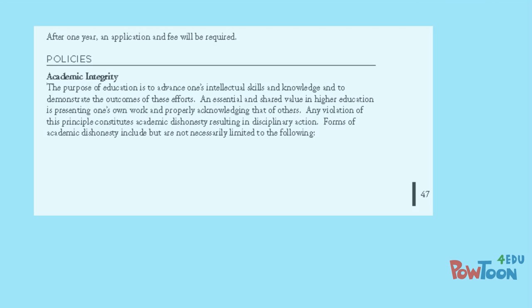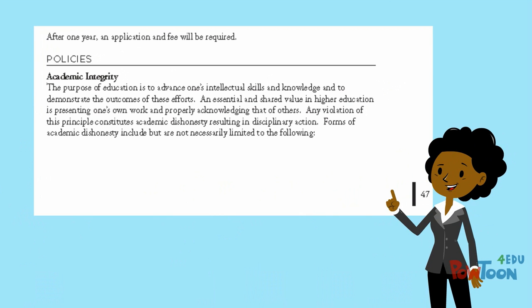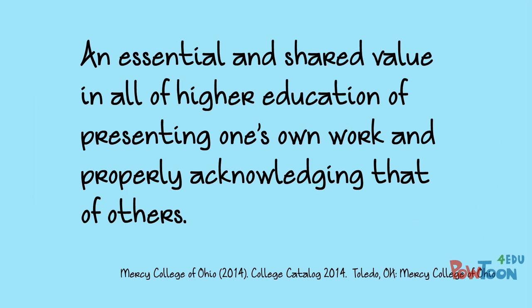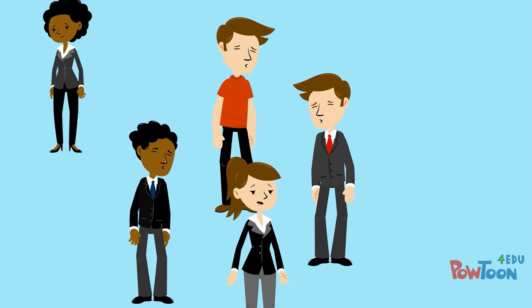The academic integrity policy informs you on what it takes to complete your coursework with the highest quality and integrity, thereby remaining in good standing with the college. The policy in the college catalog states academic integrity is an essential and shared value in all of higher education, of presenting one's own work and properly acknowledging that of others. Academic dishonesty occurs when the academic integrity policy is violated. Let's take a short look at some violations.